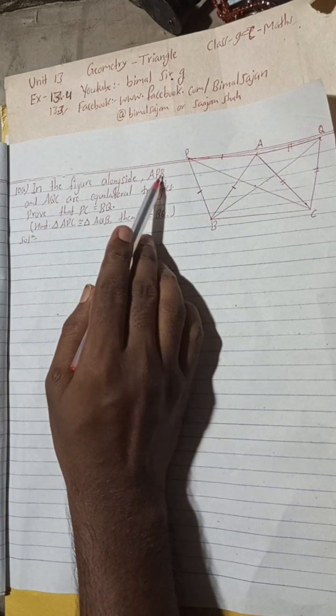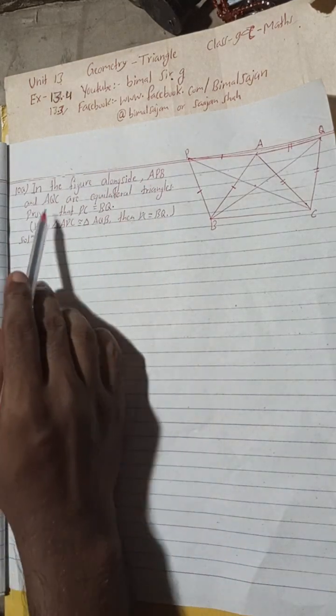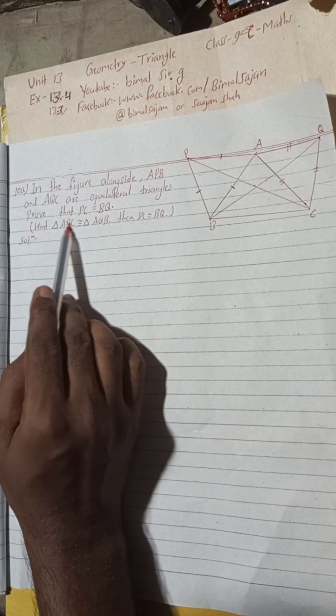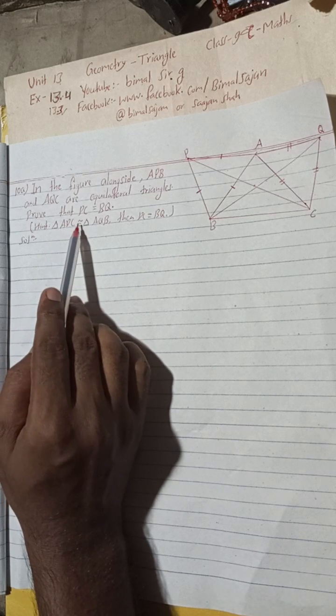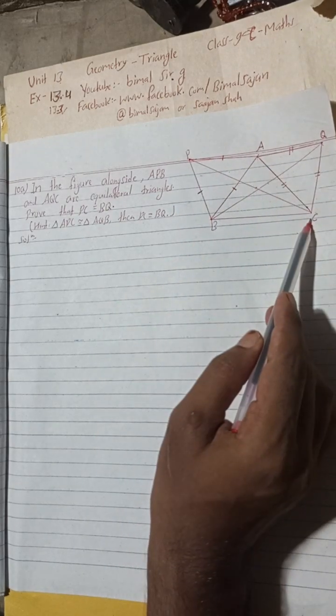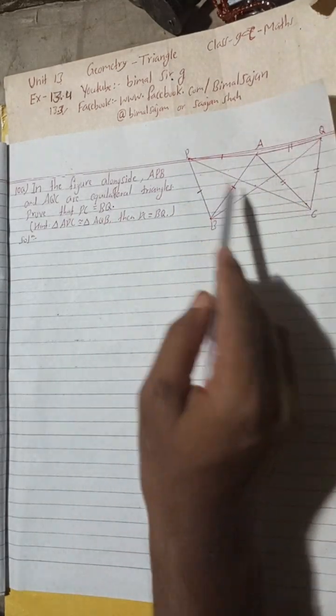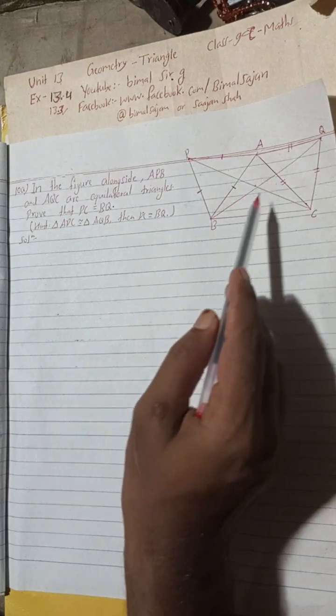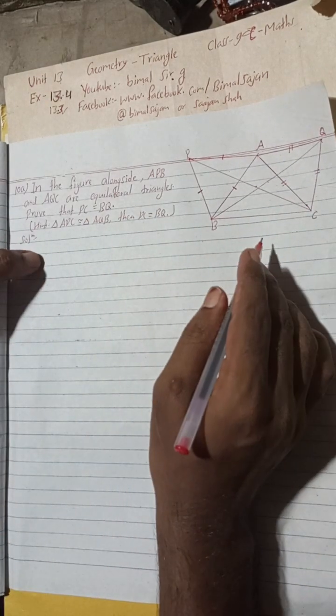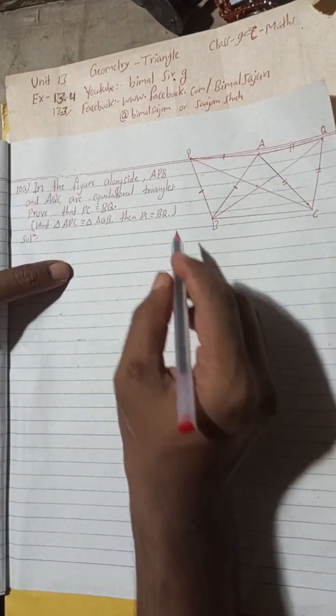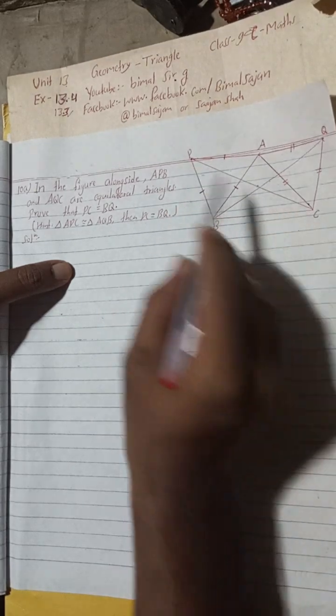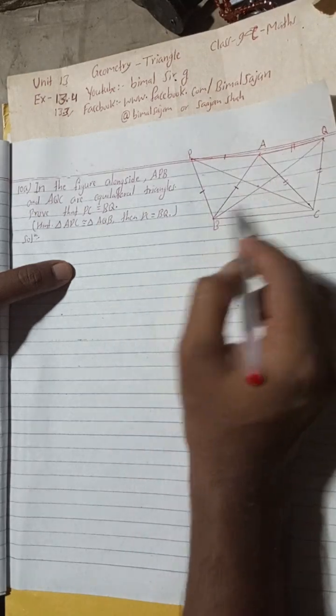Keep watching, keep supporting. Now I will begin the solution. In the figure alongside, APB and AQC are equilateral triangles. Prove that PC is equal to BQ. The hint is given: if you show triangle APC is congruent to triangle AQB, then we can easily show PC is equal to BQ.